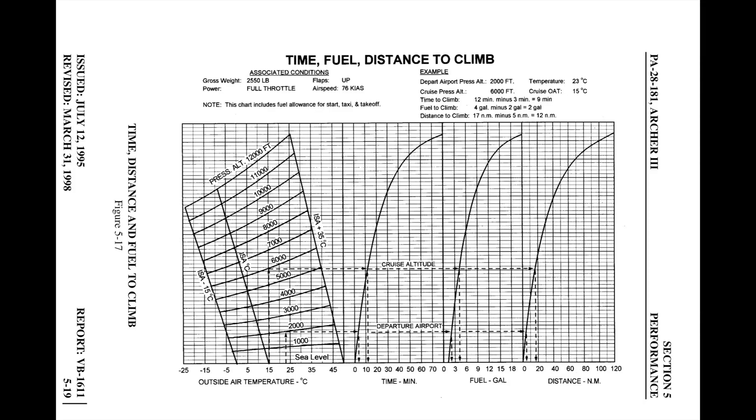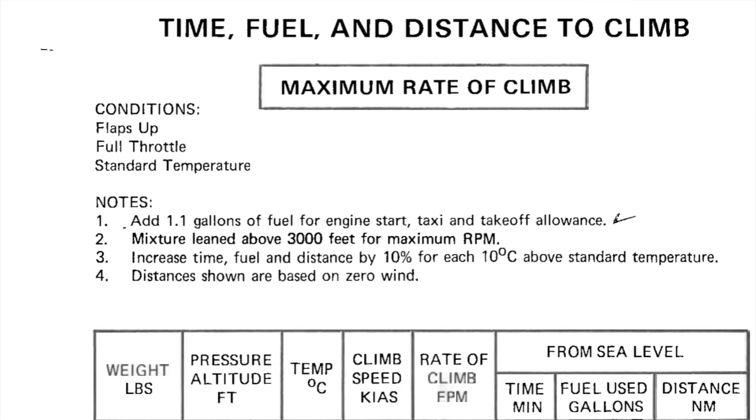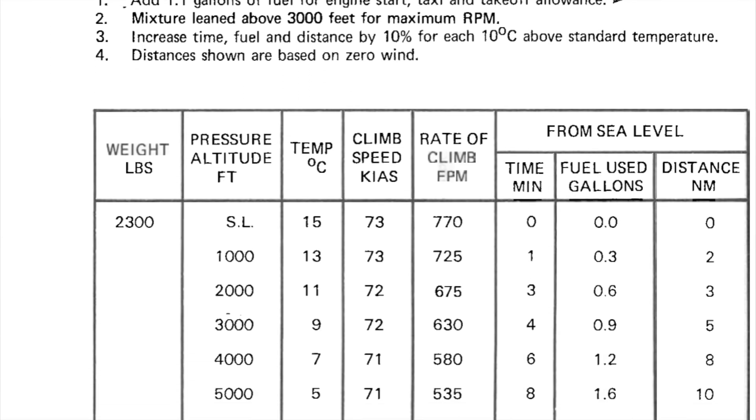For these calculations, you'll be using the time, fuel, and distance climb charts. There are a couple of different charts you might run into — Piper uses a graphical chart, while Cessna uses a lookup table. Today we'll be using the Piper chart. However, while they look different, the process for estimating performance using the Cessna tables is identical to the Piper charts.